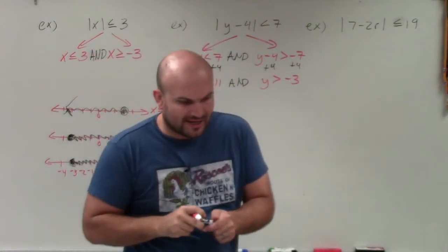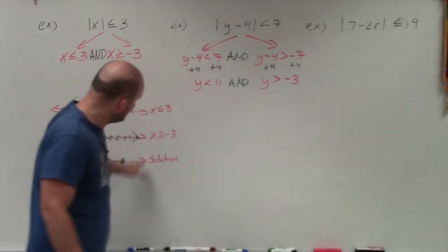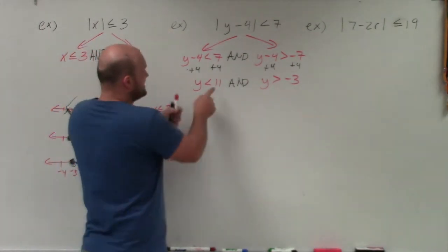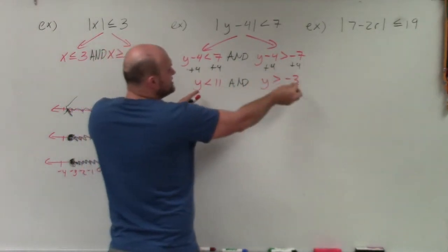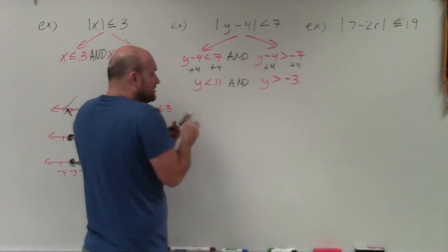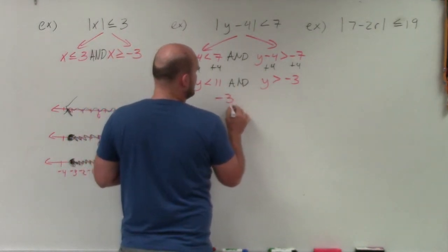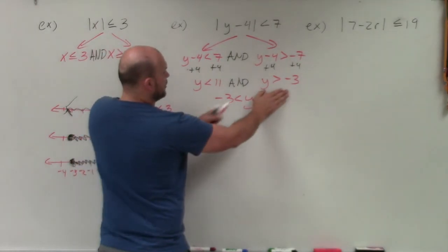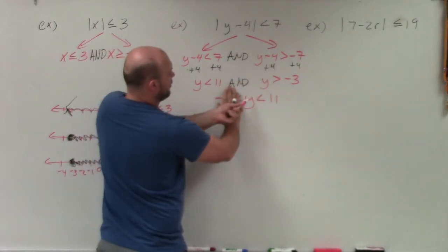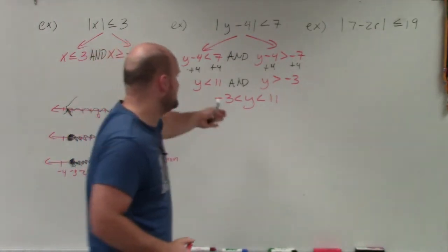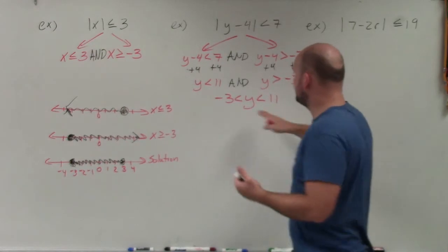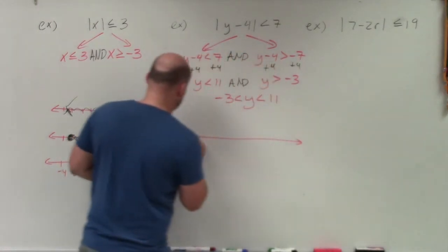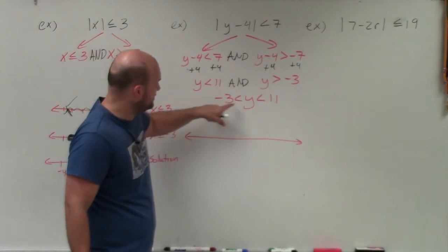Another thing you can show is that when you have these values, not only can you graph them separately, but you can also rewrite them as a single compound inequality. Since we have y is greater than negative 3 and y is less than 11, negative 3 is the lower limit and 11 is the upper limit. So I can rewrite this as: negative 3 is less than y which is less than 11. I like rewriting in this form because then I can graph it on a single number line without having to graph it three times — just make sure the number line includes the lower and upper limit.